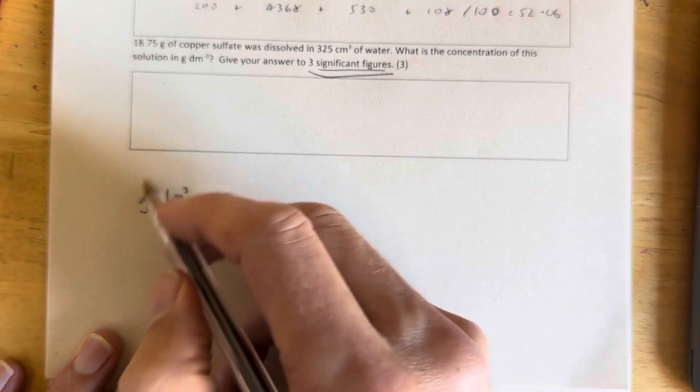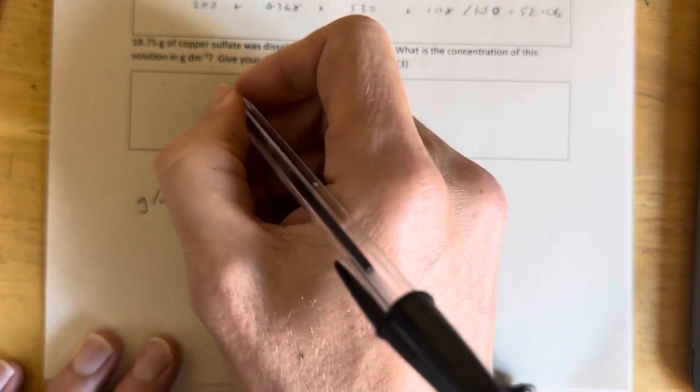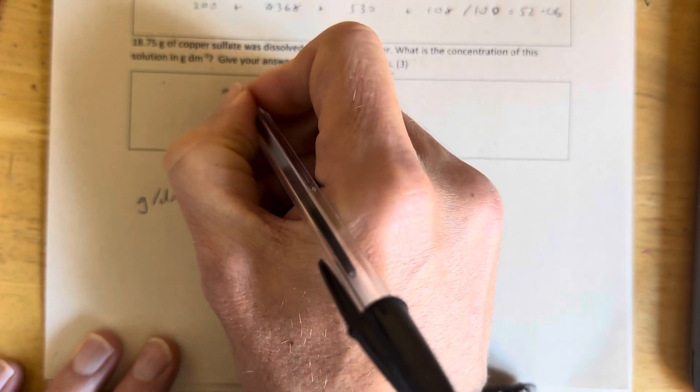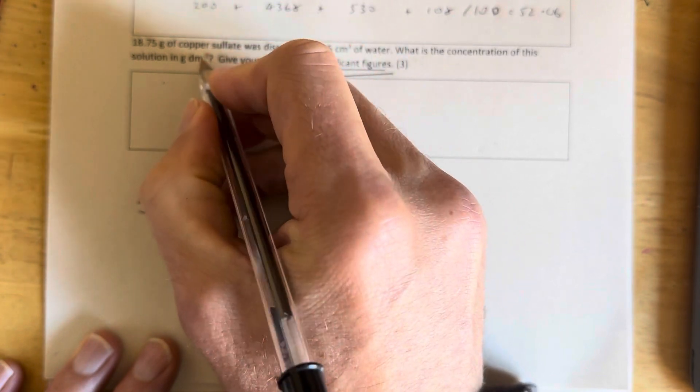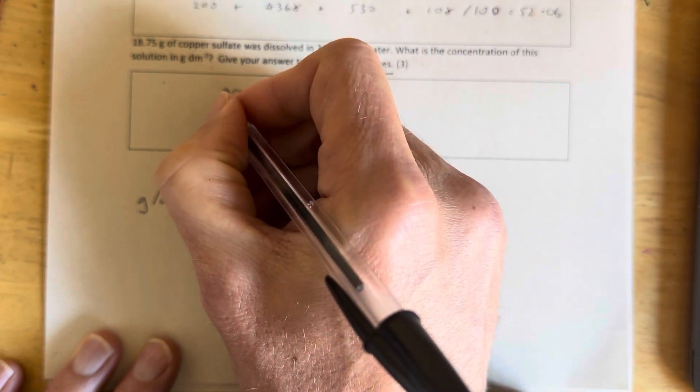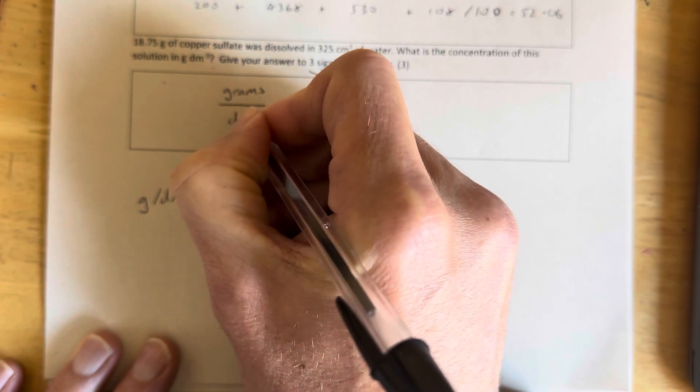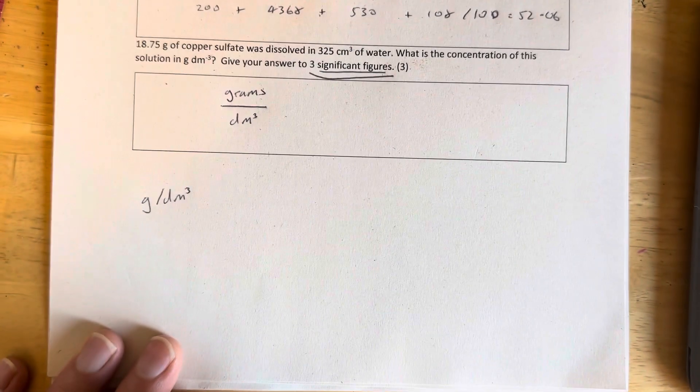So the unit for concentration here is the formula. So grams, now per, that minus there means per. Per means divide by decimetre cubed. So there is our formula.